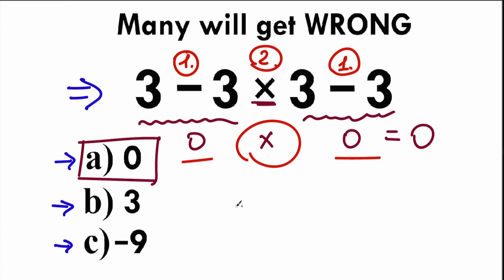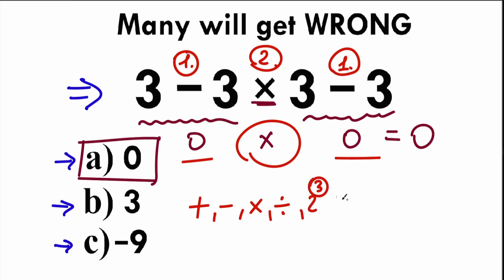Right now I'm going to show you the thing which is called order of operation. What I mean by order of operation — for example, everyone knows the basic ones: we have addition and subtraction. Moreover, we know about multiplication, division, sometimes we're talking about powers like 2 to the power 3. We're talking about powers. Sometimes we have parentheses, and sometimes we have inner parentheses — we have a lot of this stuff.